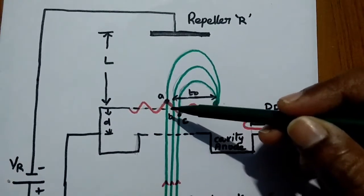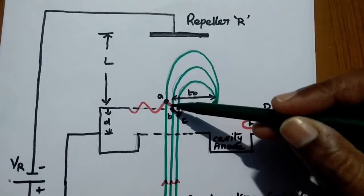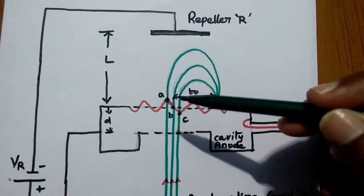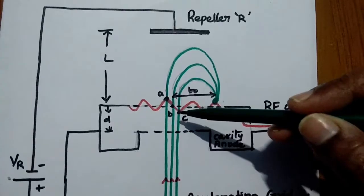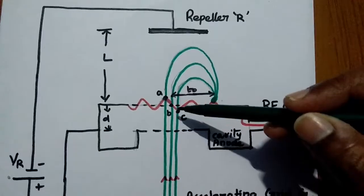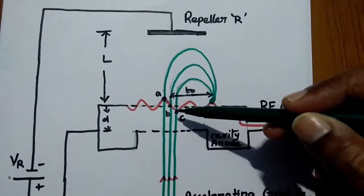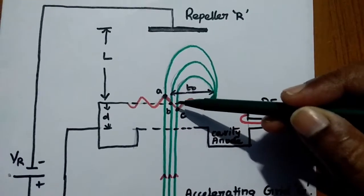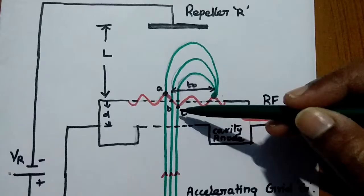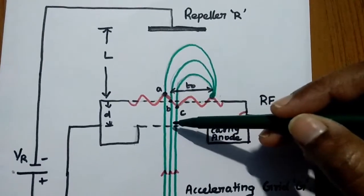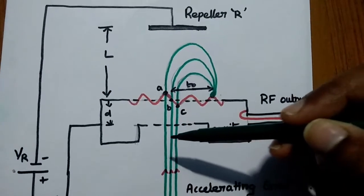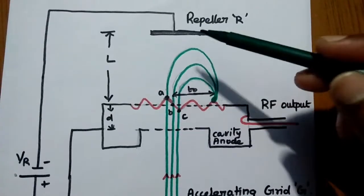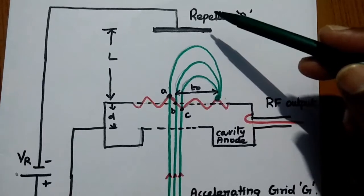Electrons passing through the neutral point of the RF noise signal experience no change in velocity — they move with their normal velocity. Electrons crossing the negative peak of the RF noise signal lose their energy and their velocity is slowed down. So there are three different velocities. Before the cavity, all electrons move with the same velocity; after the cavity, there are three different velocities. Since there is a repeller plate on the opposite side with a high repelling voltage, electrons arriving with high velocity travel closer to the repeller before being reflected back.